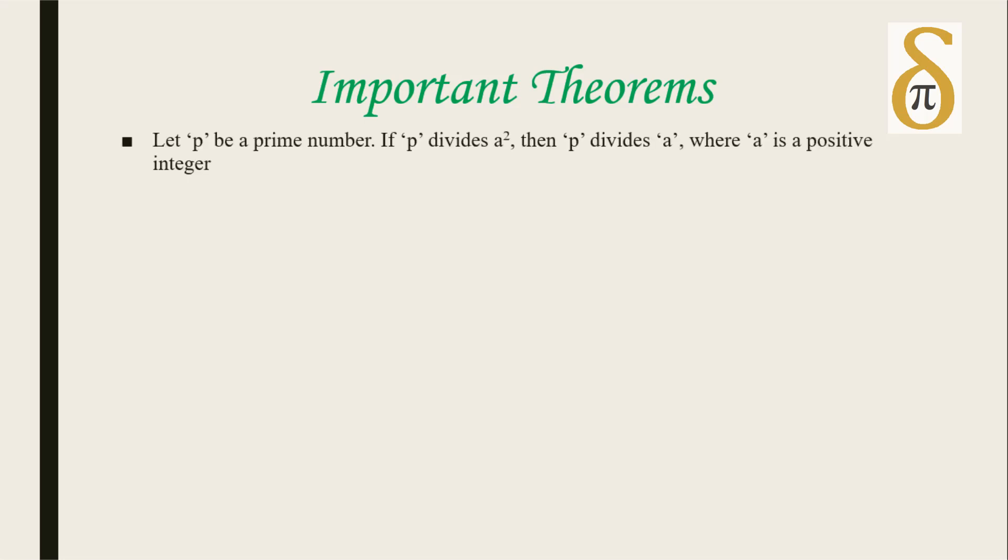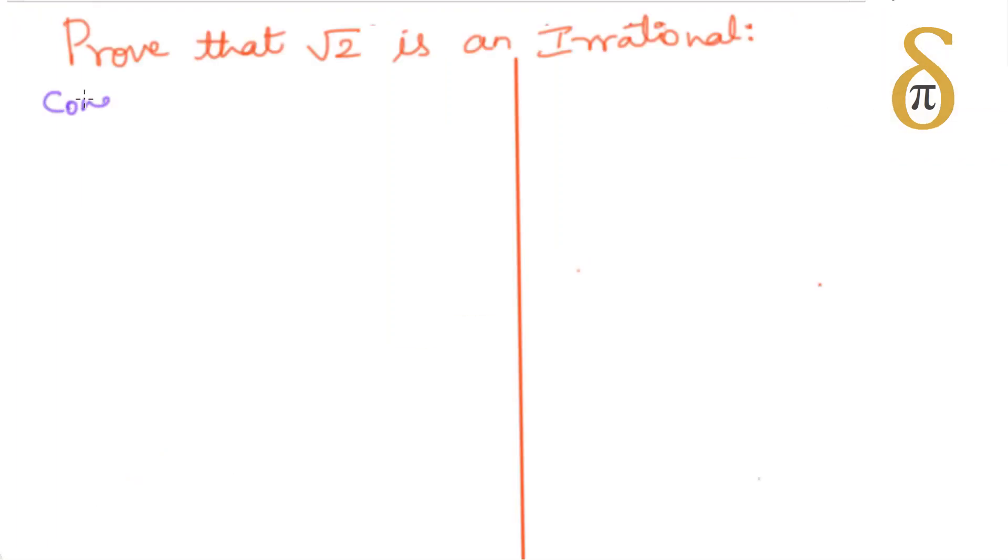Some important theorems you have to remember in this chapter: Let p be a prime number. If p divides a squared, then p divides a where a is a positive integer. The second very important theorem is prove that root 2 is irrational. Not only root 2, you may get root 3 or root 5 plus 2 or 2 minus root 5. Here is an example how to prove root 2 is irrational.